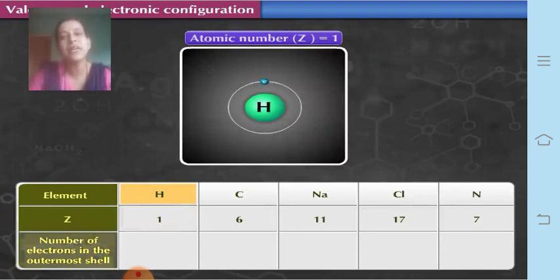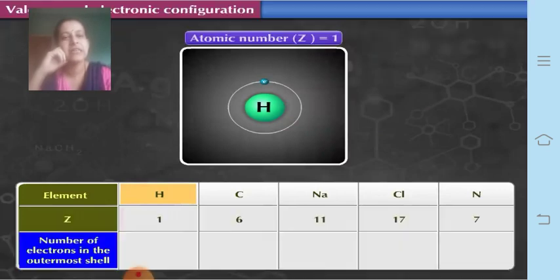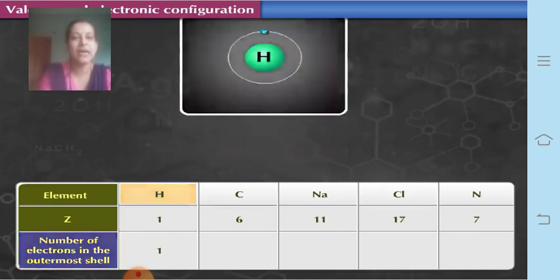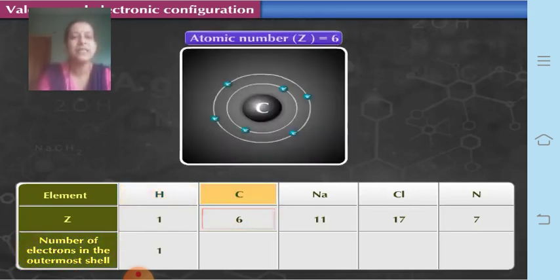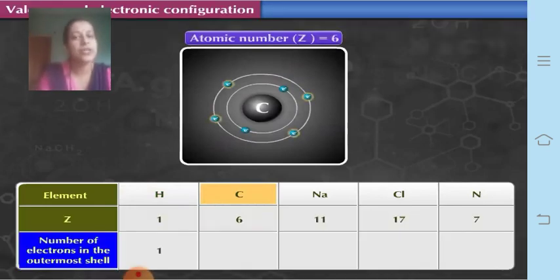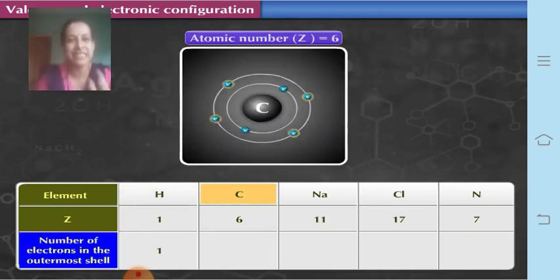Since atomic number equals number of protons, and number of protons equals number of electrons, whatever is the atomic number, that will be its number of electrons. For hydrogen with atomic number 1, it has 1 electron in the outermost shell. For carbon with atomic number 6: the K shell takes 2 electrons and the remaining 4 go to the outermost shell. So carbon has 4 electrons in the outermost shell.